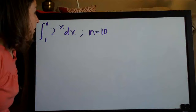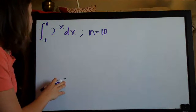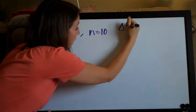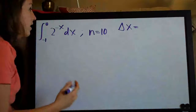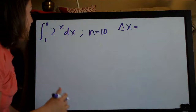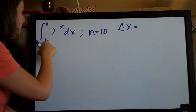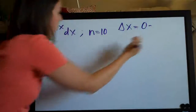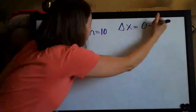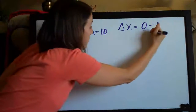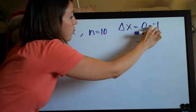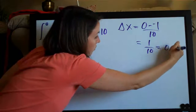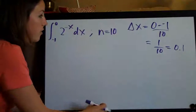The first step when you're dealing with the trapezoidal rule is always to find delta x. The formula for delta x is b minus a over n — basically the top number minus the bottom number divided by n. So in this case we do 0 minus negative 1 over n, which is 10. That gives us 1 over 10, which is also equal to 0.1. So there's our delta x.